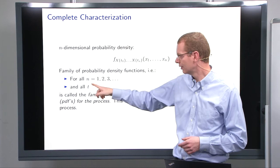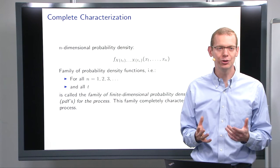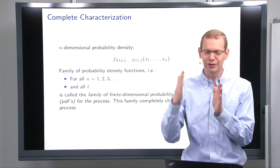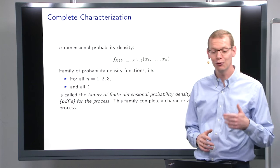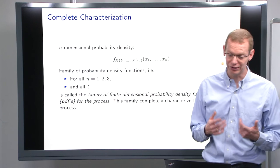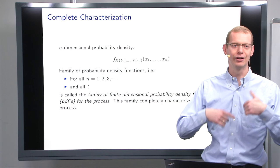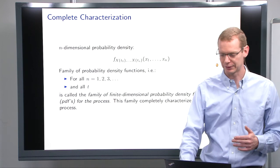And effectively, we can pick them as we wish, but in practice what we'll do is that we'll have discrete time points that are at regular time intervals. So what we call this is the so-called family of finite dimensional probability density functions, or PDFs, for this particular process. And this is the complete characterization. This is the theoretical foundation behind everything that we're going to do from now on.